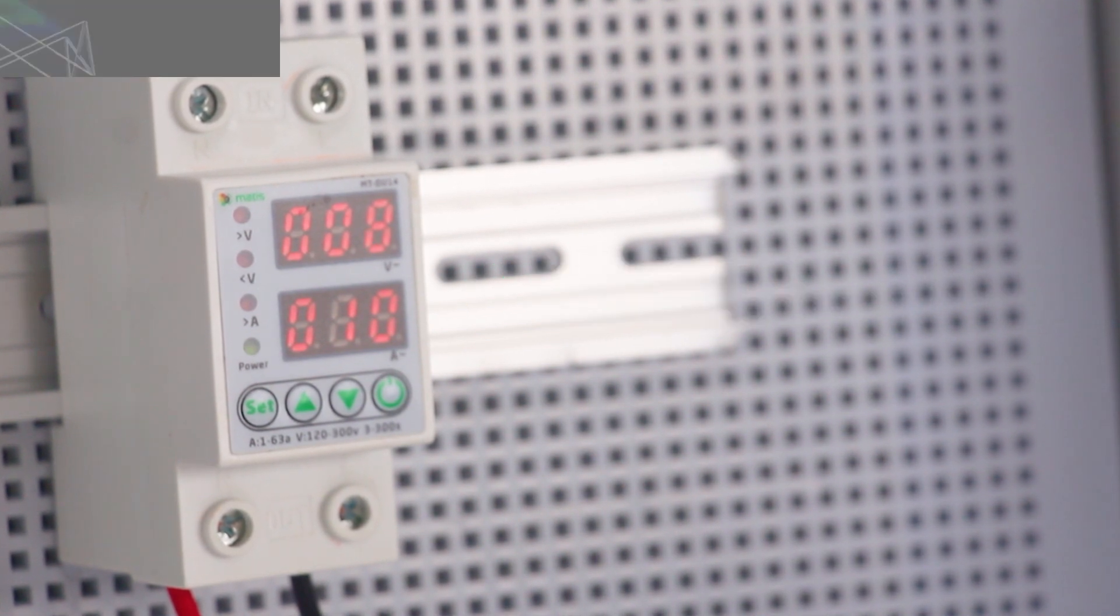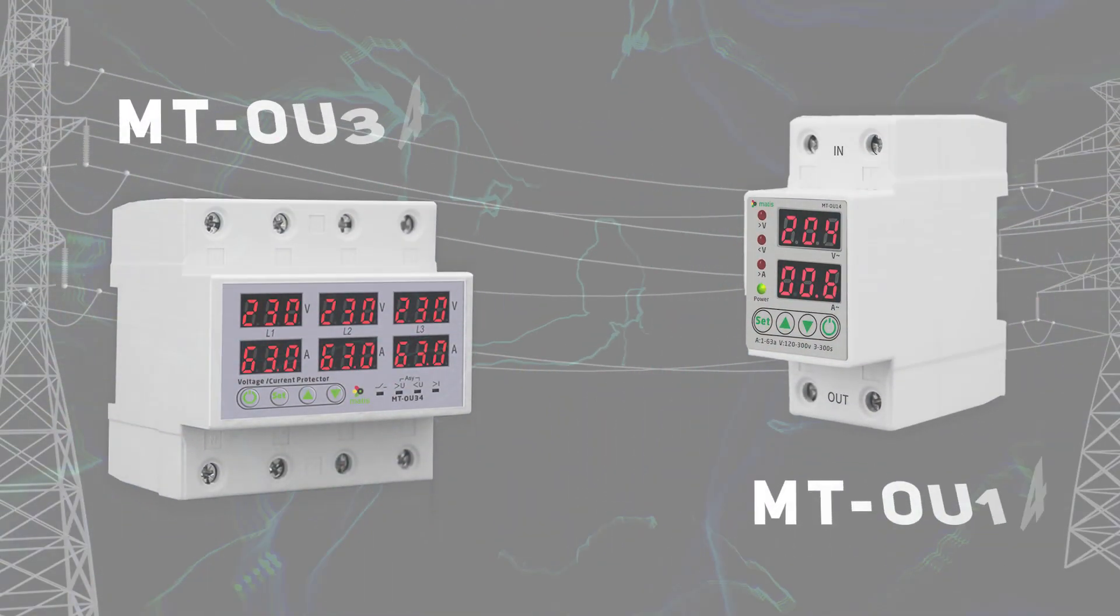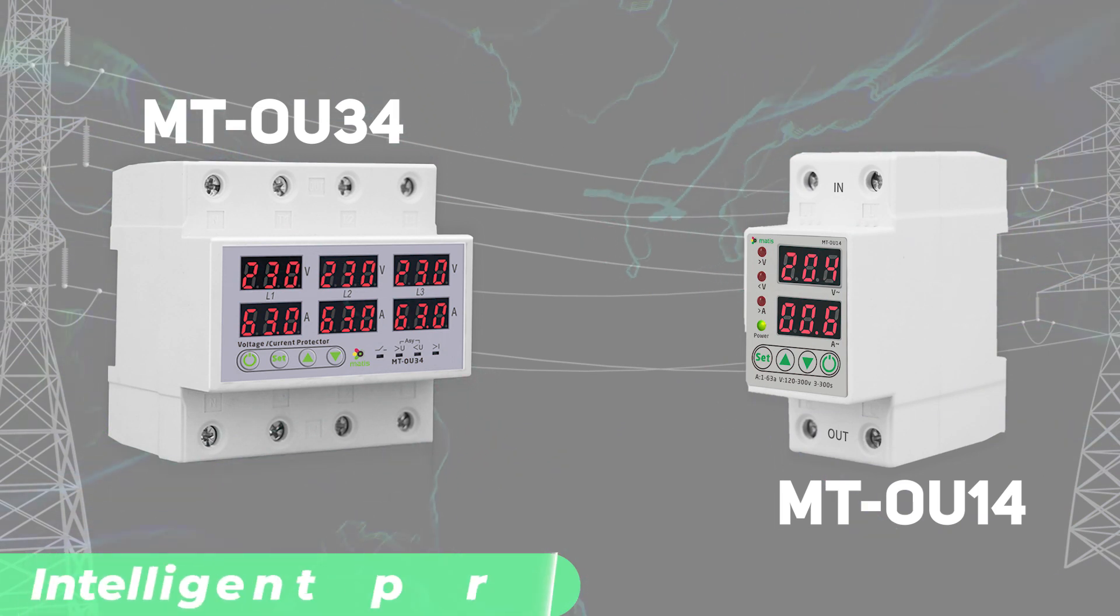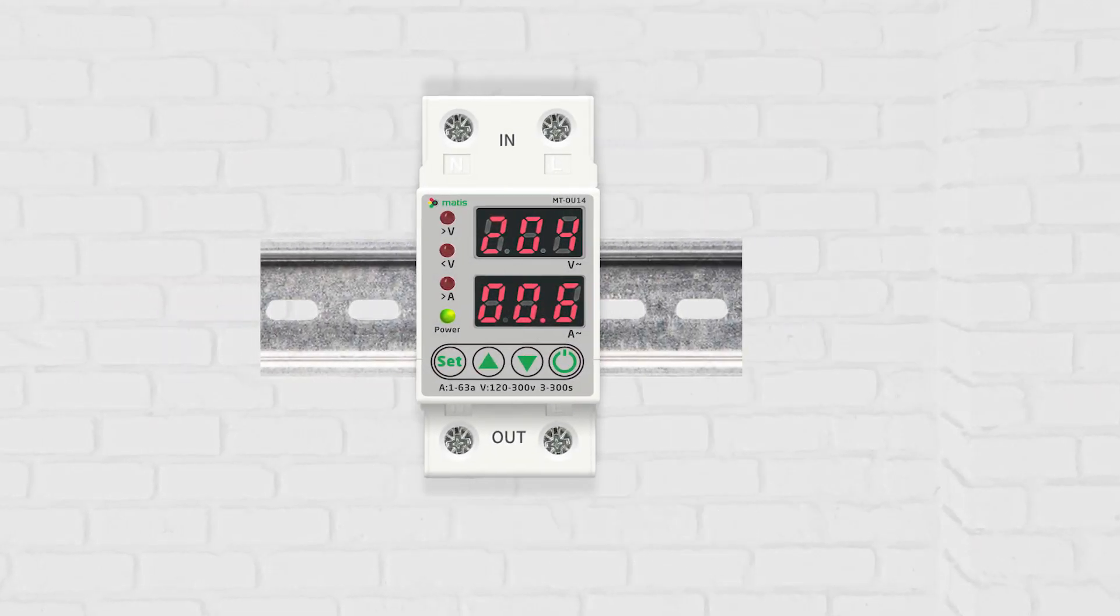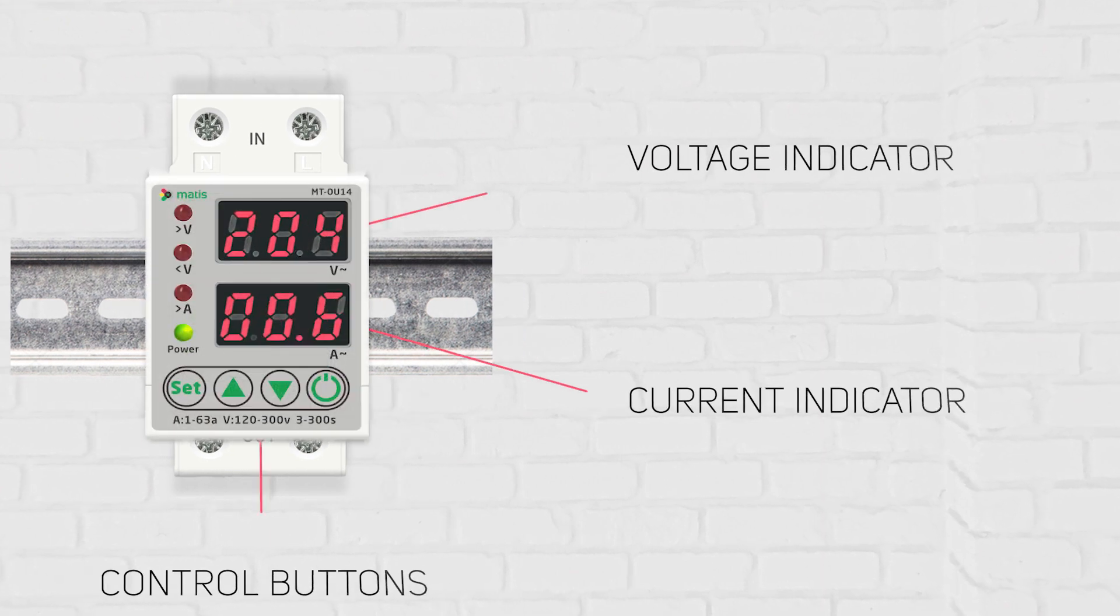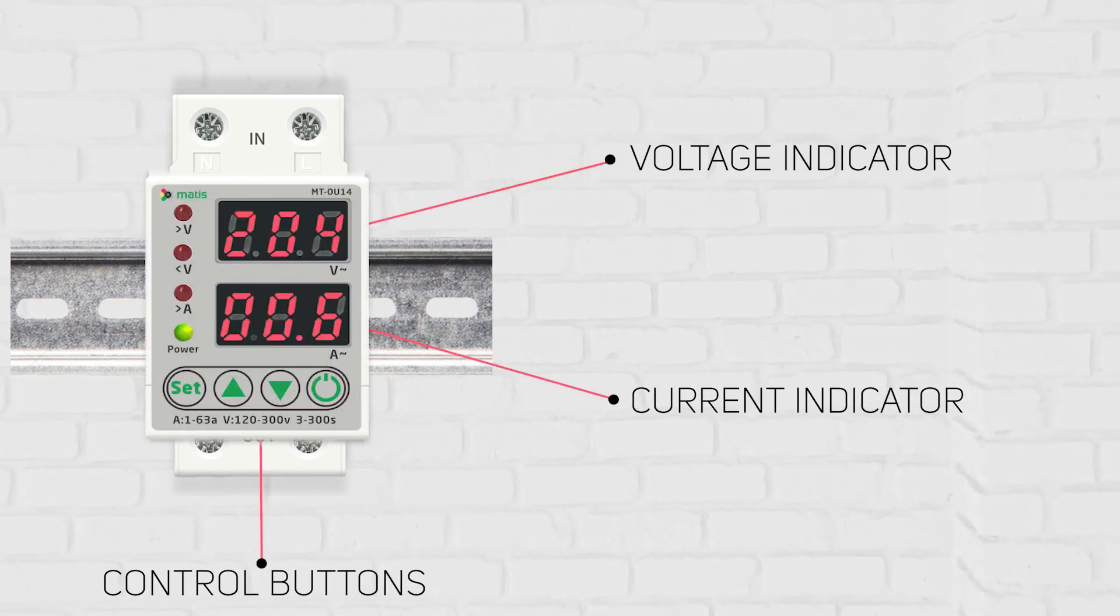Demonstration of work. The MatiSmart MTOU series is a line of devices for intelligent protection against high and low voltage, with a dual display displaying the parameters of the power grid in real time and the ability to adjust a specific operating scenario.